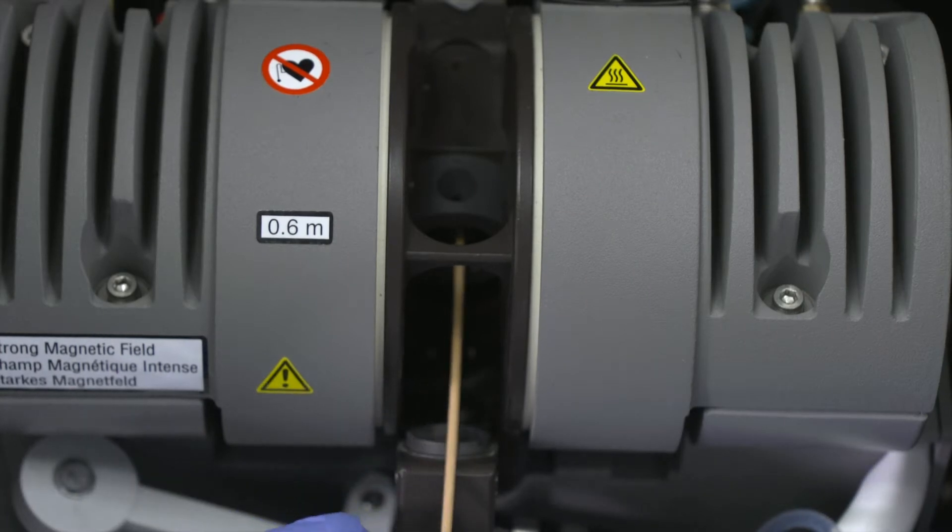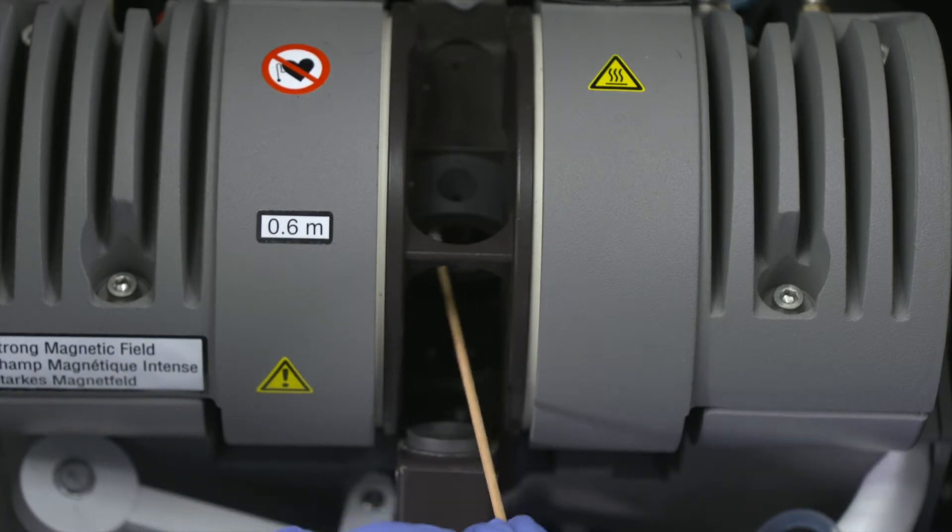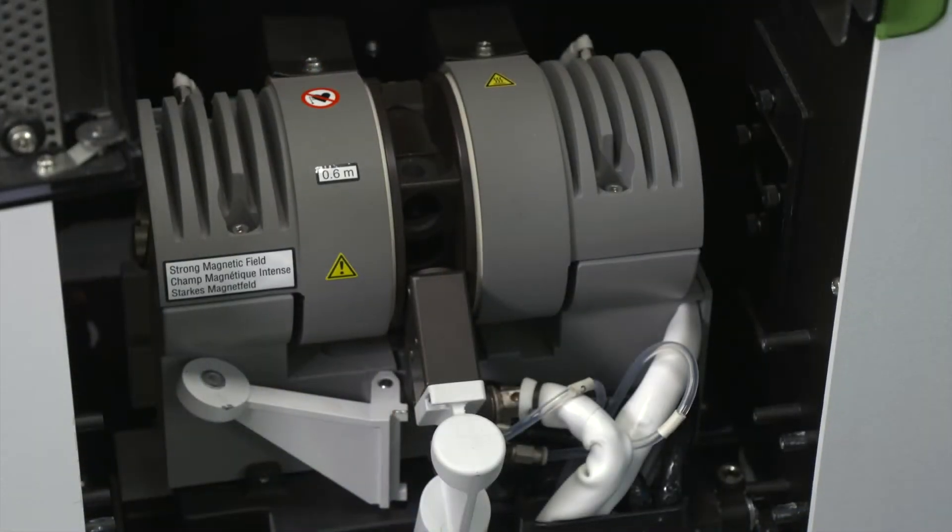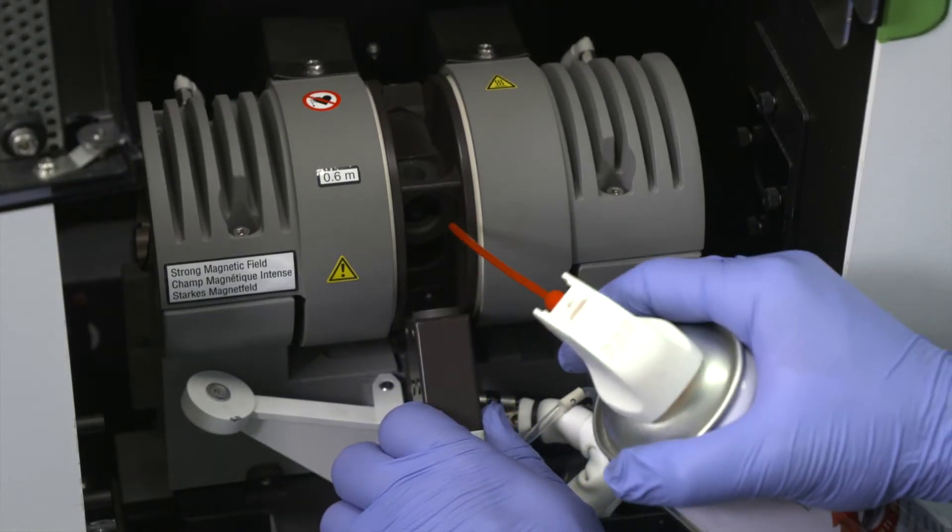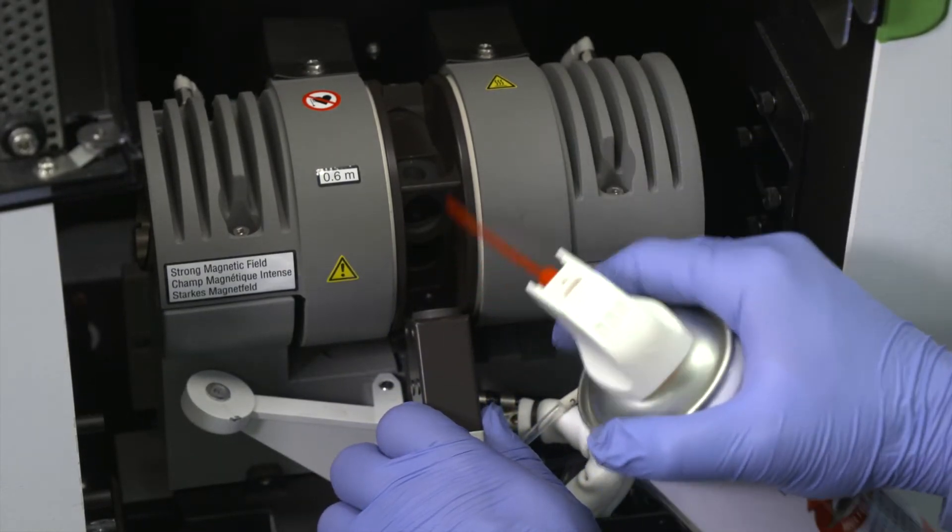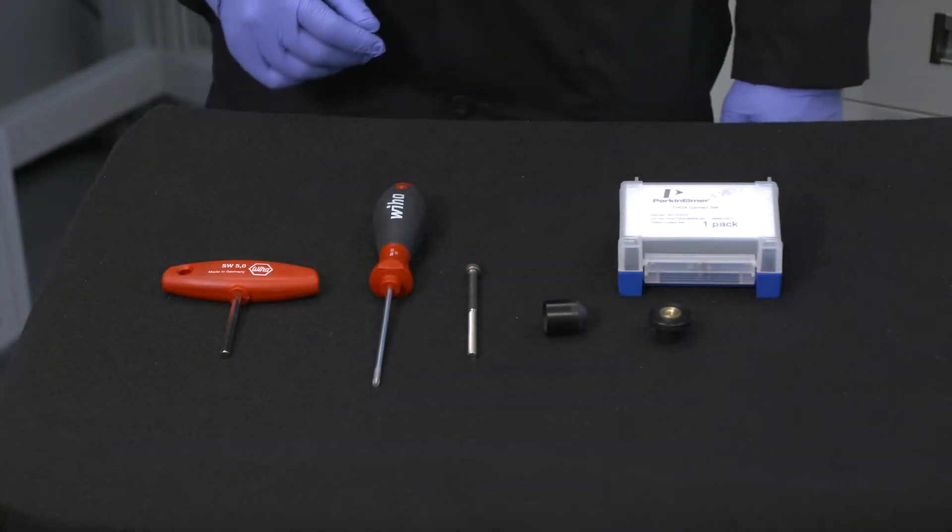Make sure that the contact housing is completely clean and free of particles. If necessary, blow out any graphite particles from the contact housing with clean, dry compressed air. We'll begin by installing the front cylinder.